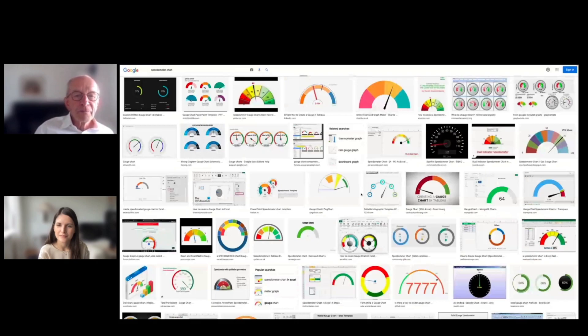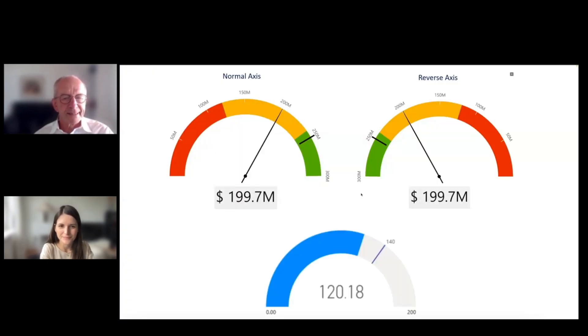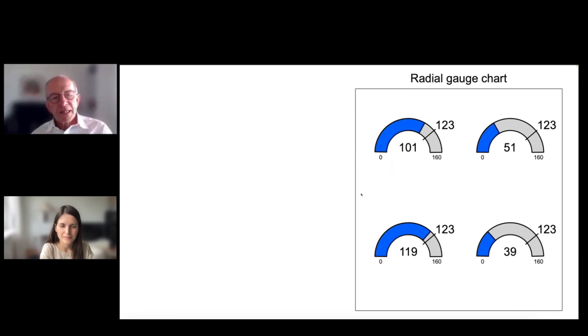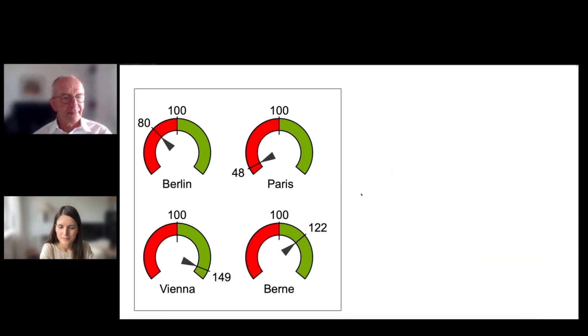The only valid use case for pie charts is essentially in maps, with maybe two or three other rare occasions. The same applies to speedometers — they are as useless as pie charts. If you do a Google image search for speedometers in dashboards, you see how we are misusing the screen area. It's not data density, it's the opposite. People are proud of producing speedometers, but we must do it differently.